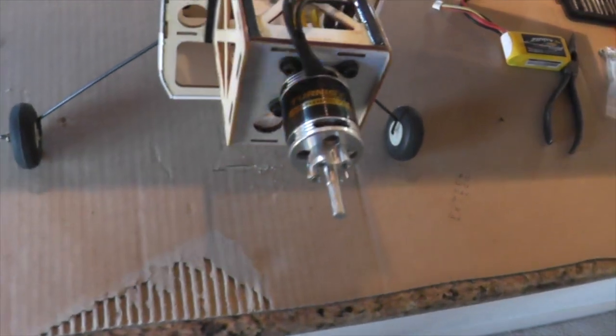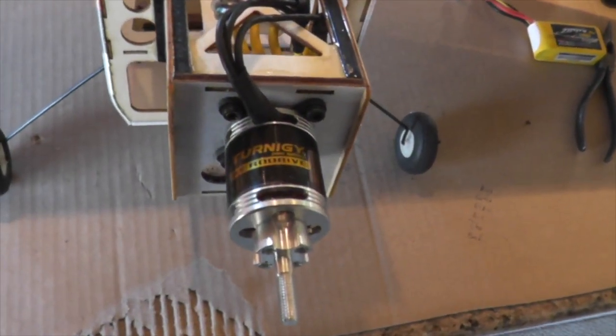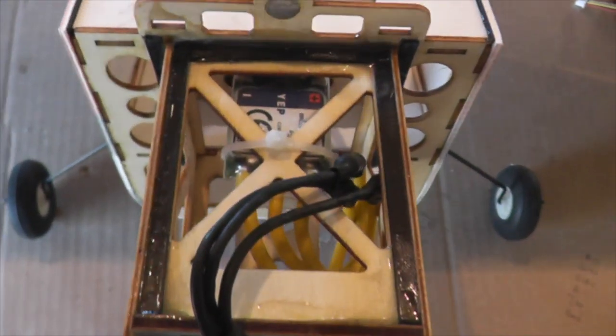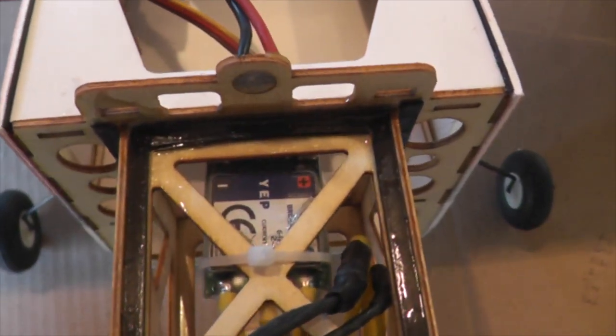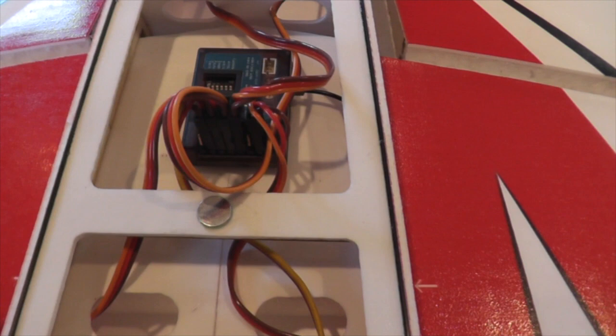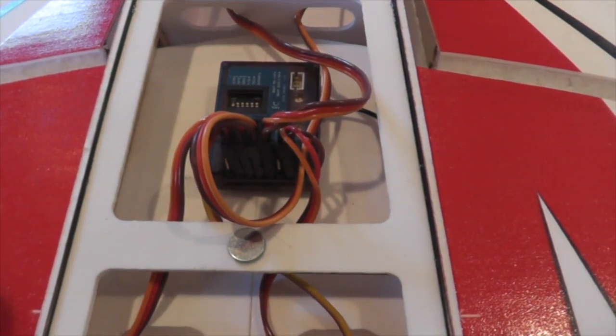I'll put an Eternity Aerodrive motor on there until my Sunny Sky arrives. I've got a 30 amp YEP ESC mounted right behind there. And the receiver is in, all the servos are hooked up.